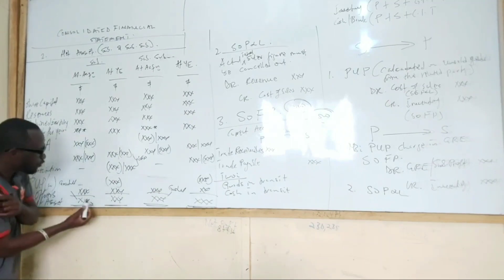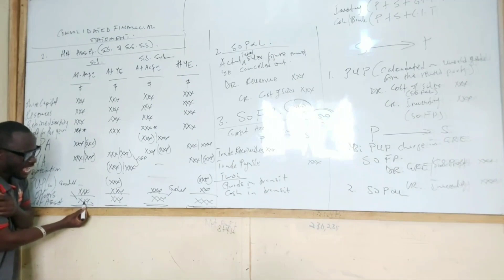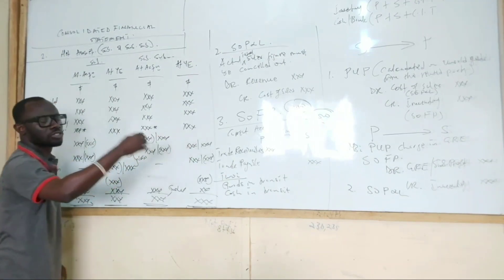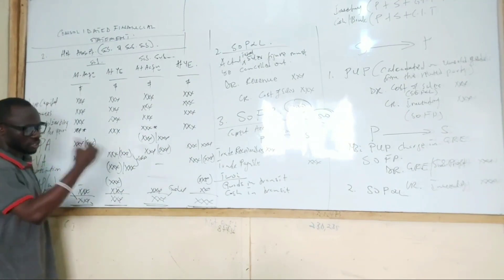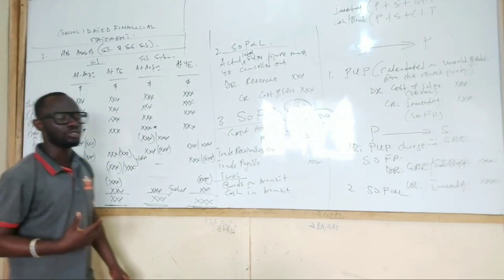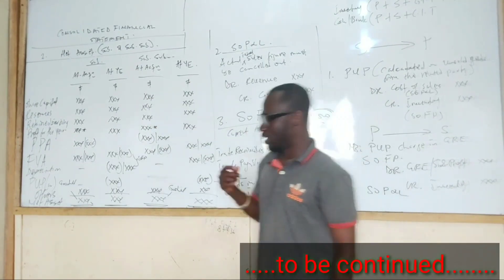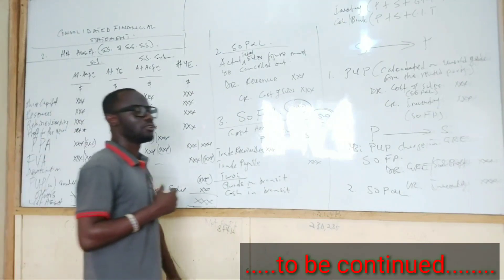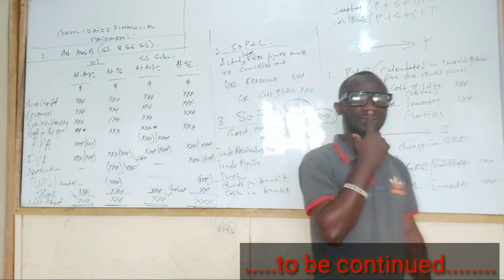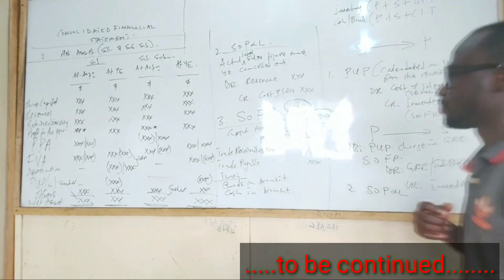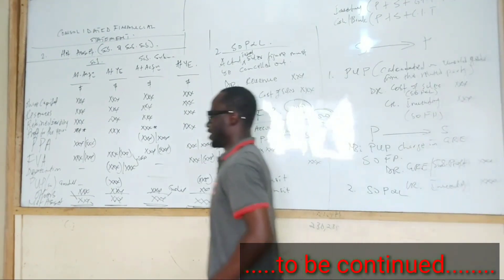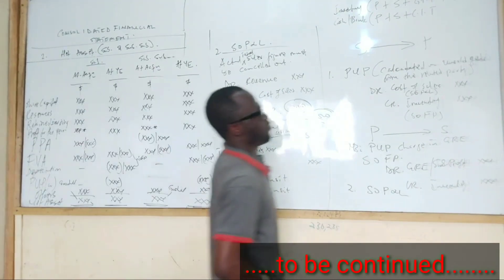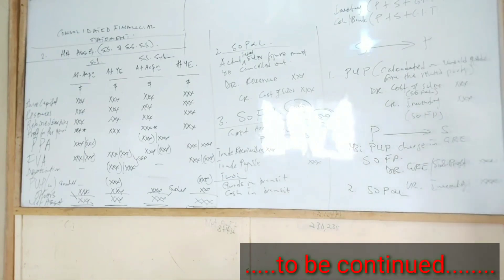The difference between the net asset at acquisition and at year end is called post-acquisition profit or loss. That post-acquisition profit or loss will be used in group retained earnings and NCI. This is the second principle you have to understand about consolidation. Next week I will add the rest of the principles and we will start crunching some numbers.